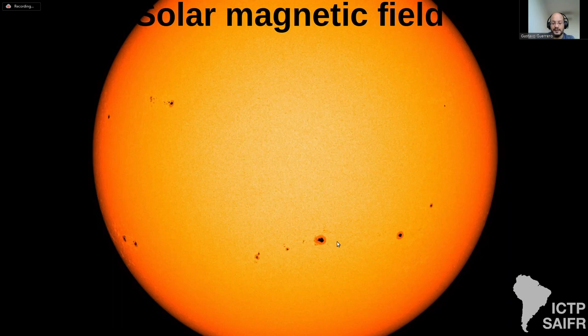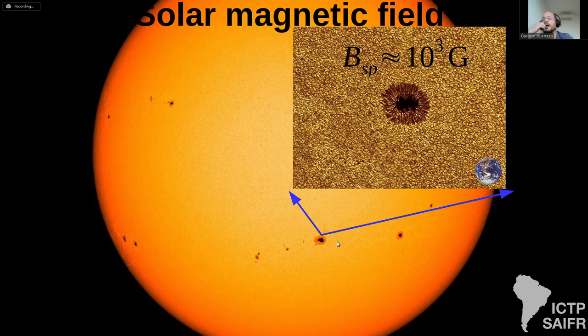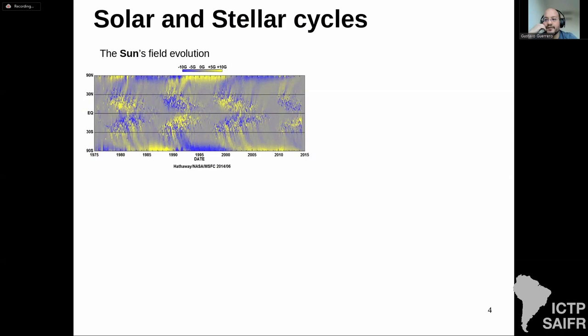This is the Sun from the SDO satellite, and here we have a sunspot with a kilogauss magnetic field roughly the size of the Earth. When we observe these spots over time we observe a cycle — the sunspot cycle. It has 11 years, but from the magnetic point of view it has 22 years. This butterfly diagram shows time and latitude and presents how sunspots evolve from mid-latitudes towards the equator, then reverse polarity and go again towards the equator.